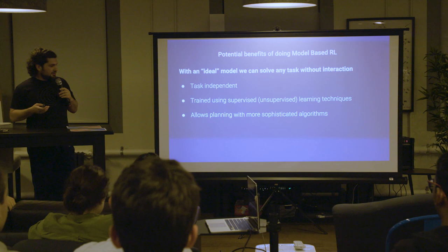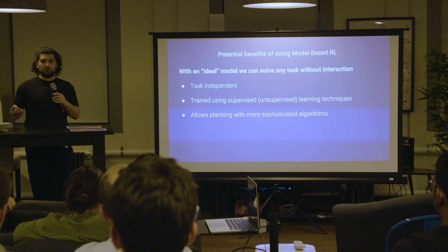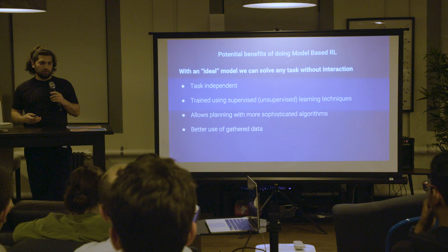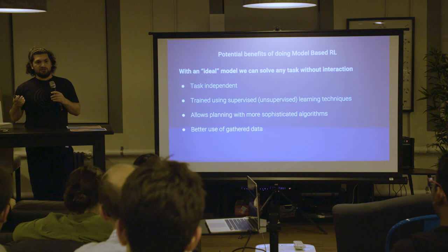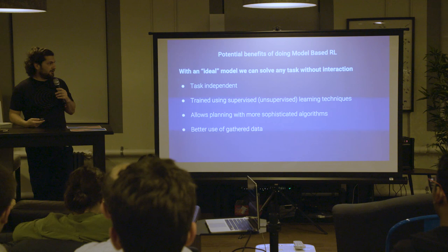Importantly, we can do planning with much more sophisticated algorithms — for instance, trajectory optimization in robotics if you have a good model, or tree search like in Go and chess. One often-mentioned argument is that you better use your data: rather than just using a single scalar reward signal, by trying to capture all variety of the environment you are learning faster by using more information.